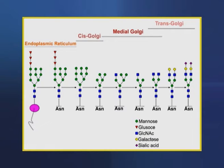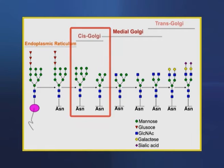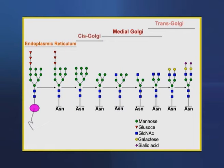These compartments contain different enzymes and mediate distinctive functions. The N-linked carbohydrate units of glycoproteins are further modified in each of the compartments of the Golgi complex. In the cis-Golgi compartment, three mannose residues are removed from the oligosaccharide chain of proteins destined for secretion or for insertion in the plasma membrane.